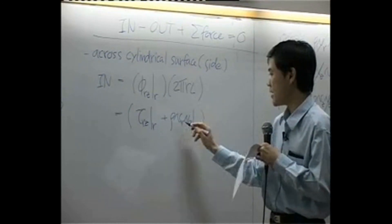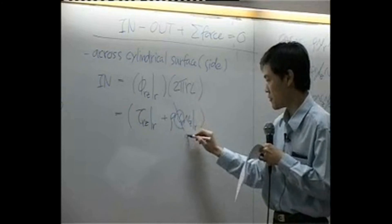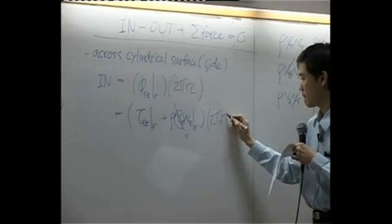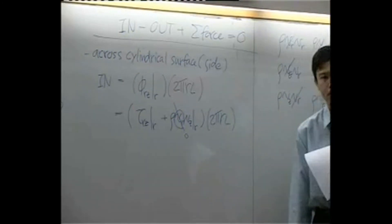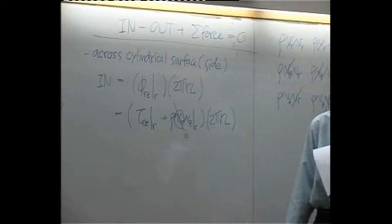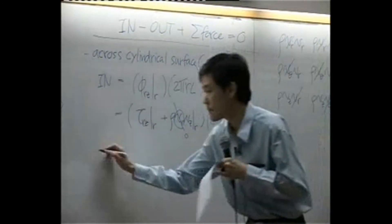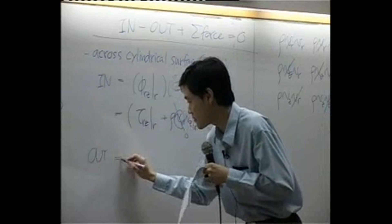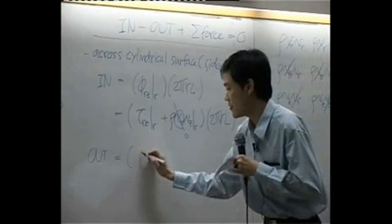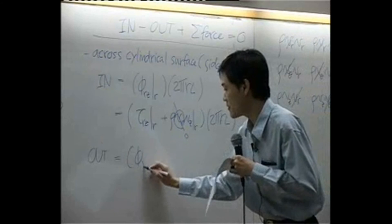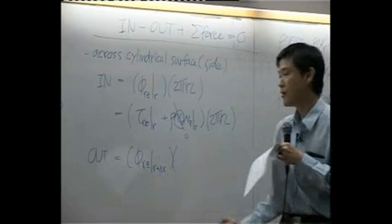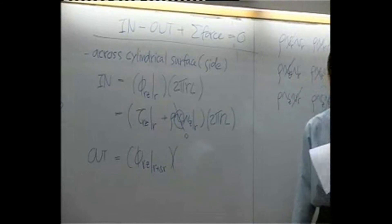VRZ consists of two terms: tau_rz at r plus rho*vr*vz at r. However, vr here becomes zero, so we have only one term remaining.